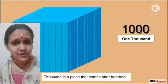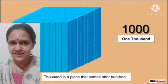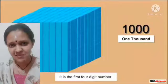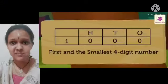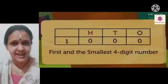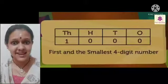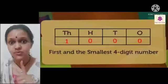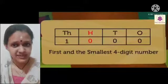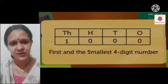Thousand is the place that comes after hundred. It is the first four-digit number. The four-digit numbers are placed in the ones, tens, hundreds, and thousands columns. The number one thousand has one thousand, zero hundreds, zero tens, and zero ones.